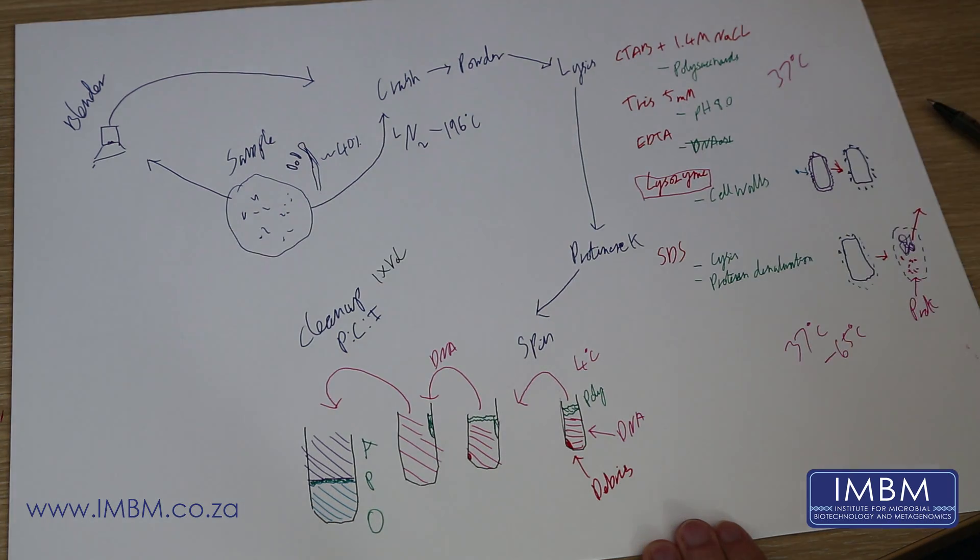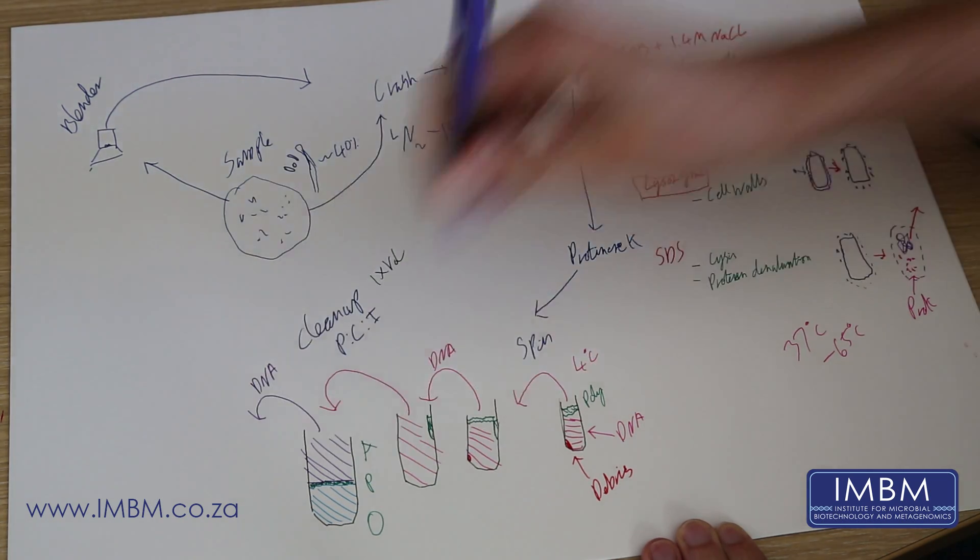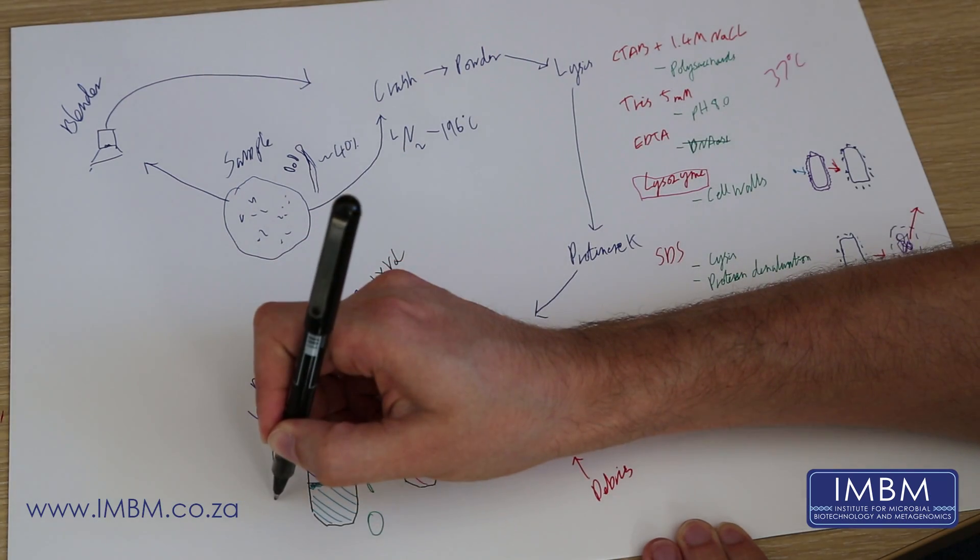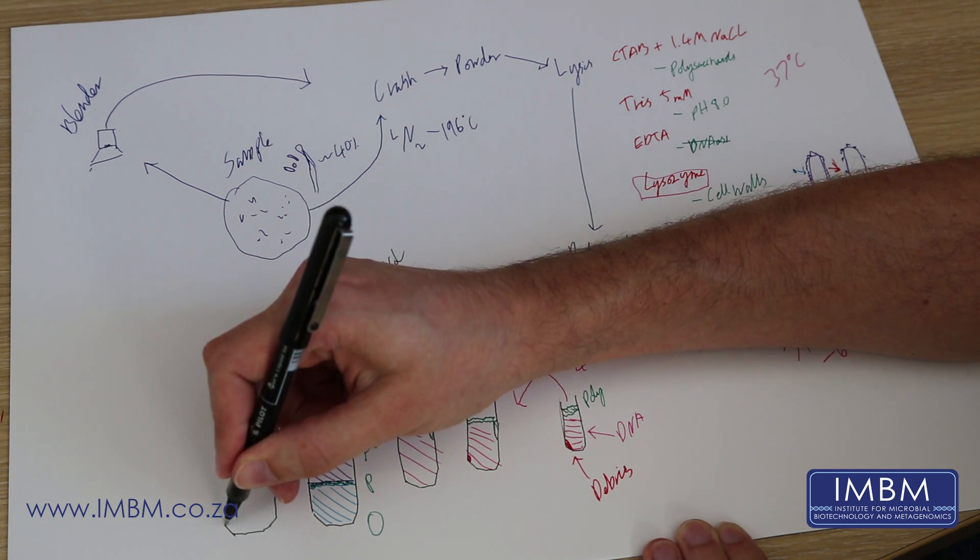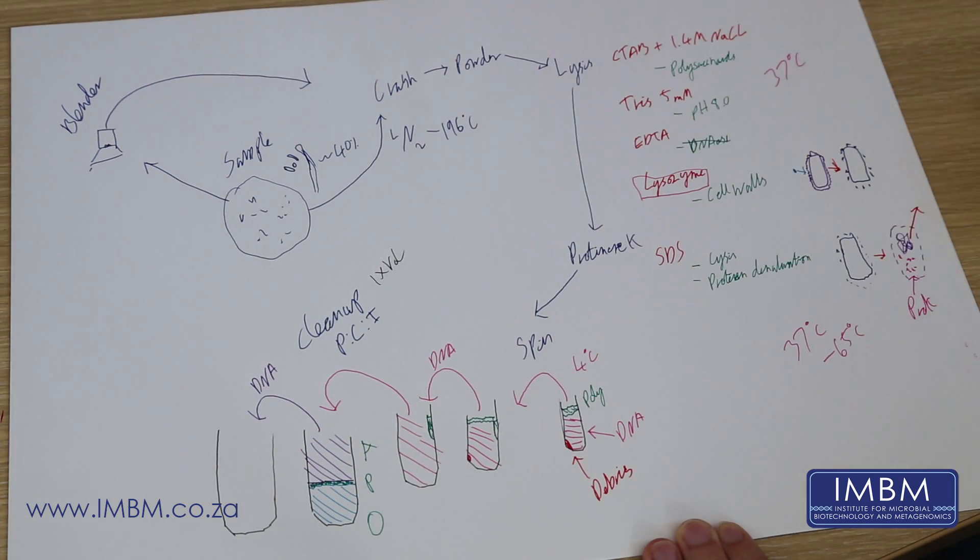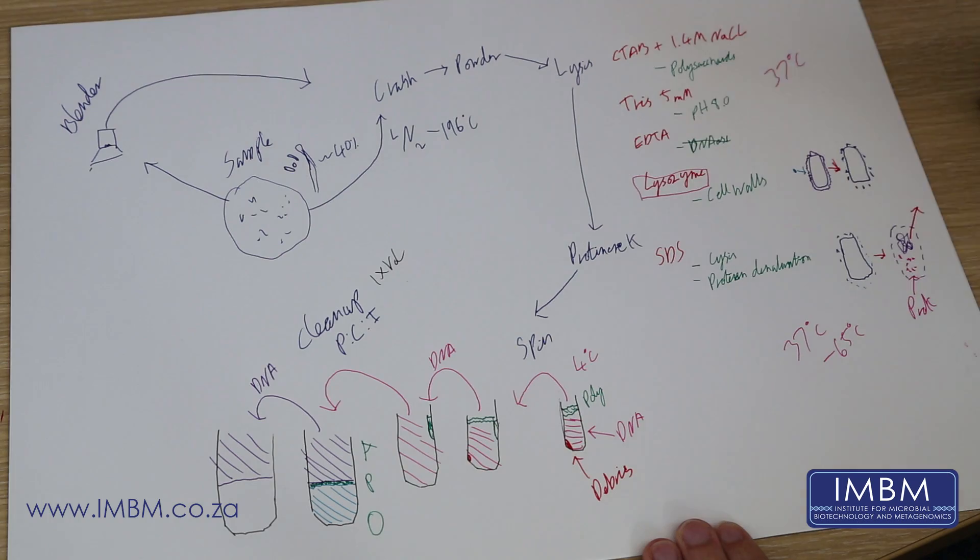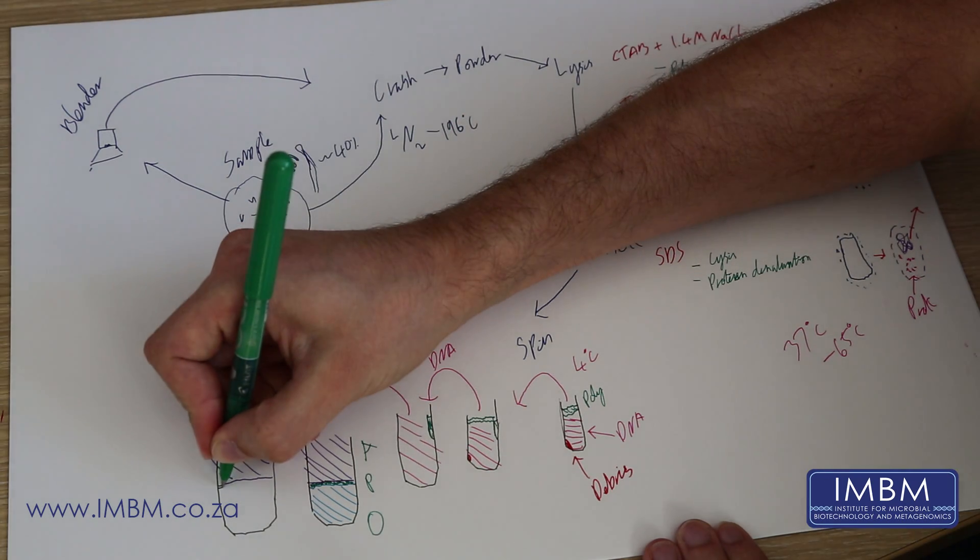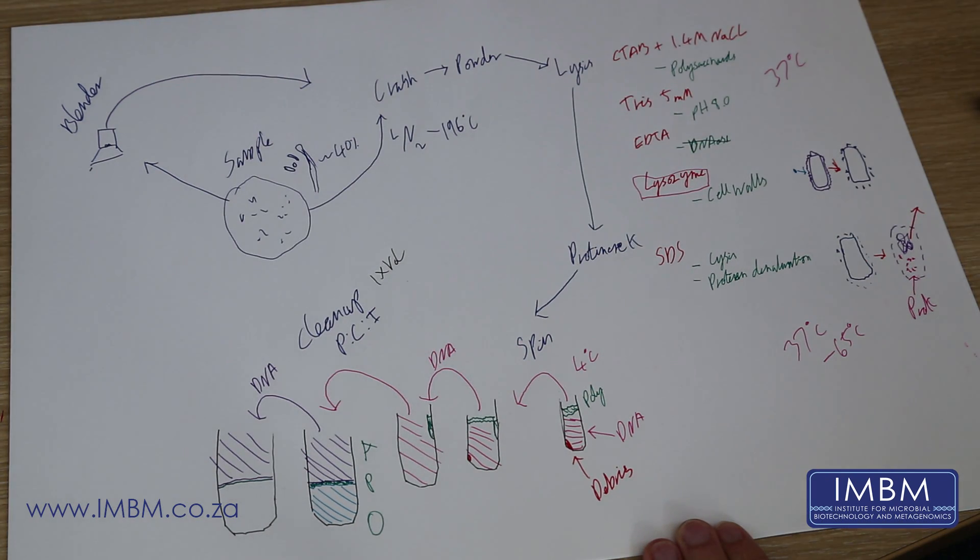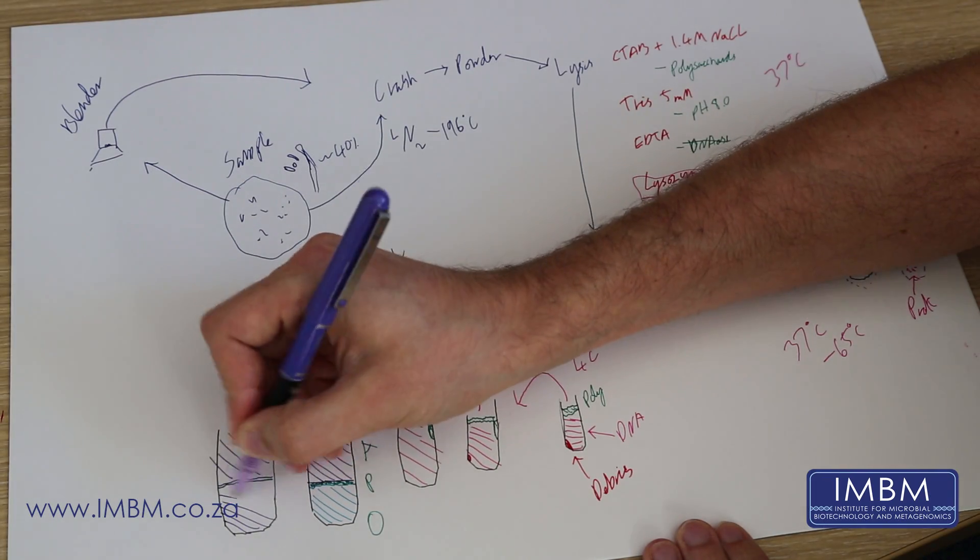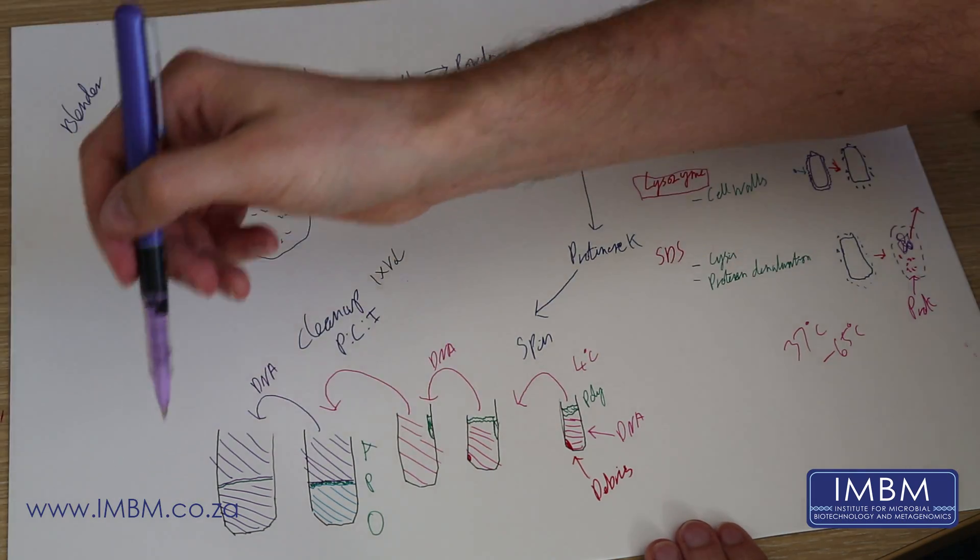You only take the aqueous phase over, this is the one with the DNA. In your second spin, your aqueous phase should end up being nice and clear. You'll end up with a tiny, tiny layer of protein, and your organic phase should have also changed color to slightly clear if all has gone well. If not, just do a third PCI and you'll be fine.